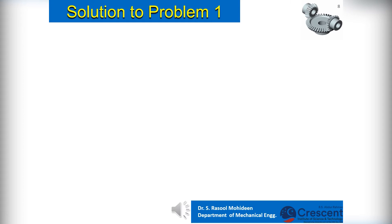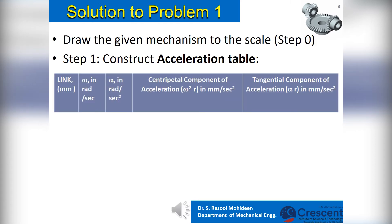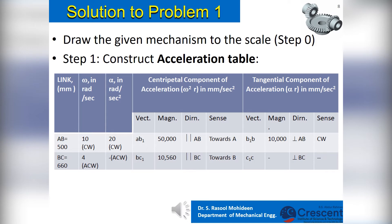To proceed with the solution of Problem 1, first we need to draw the given mechanism to a scale — this is Step 0. Step 1 is to construct the acceleration table. The table will contain the name of the link, its angular velocity, angular acceleration, and centripetal as well as tangential components. The magnitude of the centripetal component will be omega squared into the length of the link and will act parallel to the link, whereas the tangential component will have the magnitude of alpha into the length of the link and will be perpendicular to the position of the link. Since omega and alpha of link AB are completely known, its row is completely filled up. For other links, the unknown alpha will be found from the acceleration diagram.